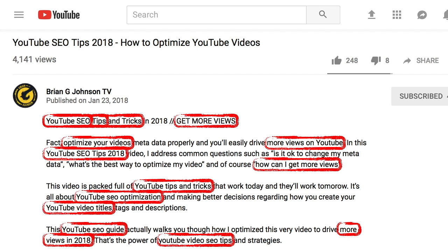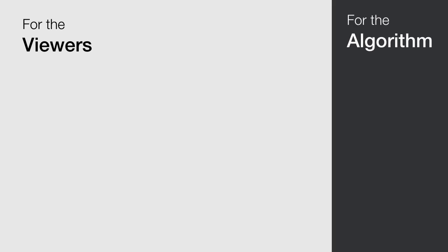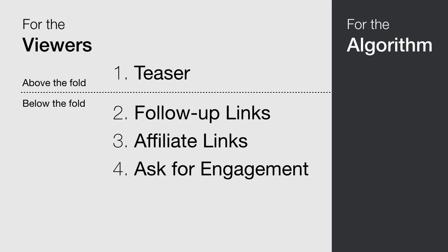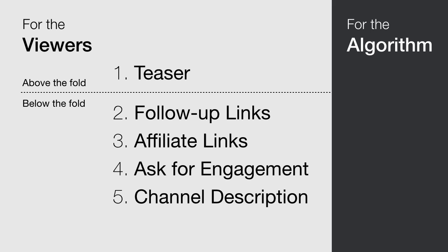Keep in mind that descriptions have two purposes: being useful for our viewers and providing search terms for the algorithm. For the viewers we generally have a structure like this: teaser, follow-up links, affiliate links, ask for engagement, channel description, and maybe some legal text. On the other hand, we have search terms weaved into the description to feed the algorithm.